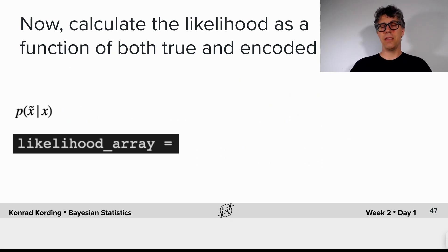x is the real position. x tilde is the position that arrived at the brain. Now, the likelihood depends on both. The likelihood is, in a way, about how compatible those two are.